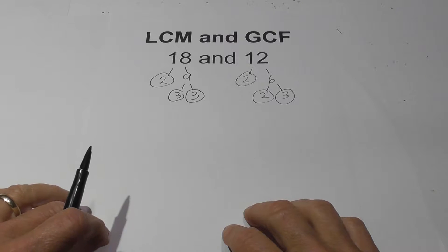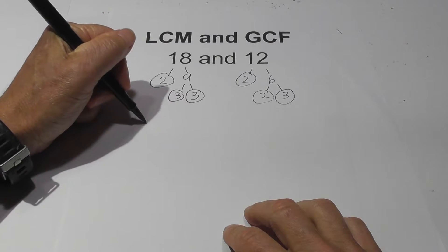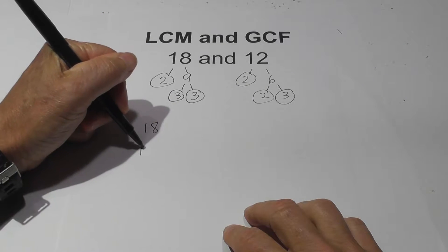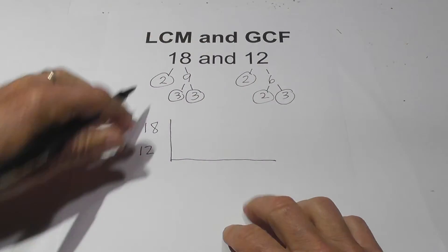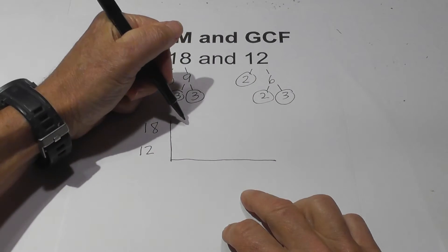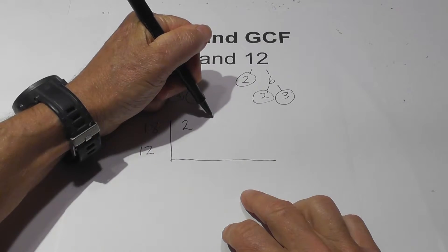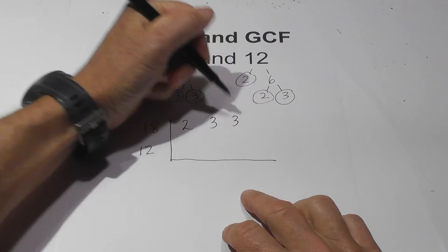Now next what I like to do to help avoid mistakes is I set up a little chart and I write the factors for each number. I'm going to write a 2, a 3, and a 3 for the 18.